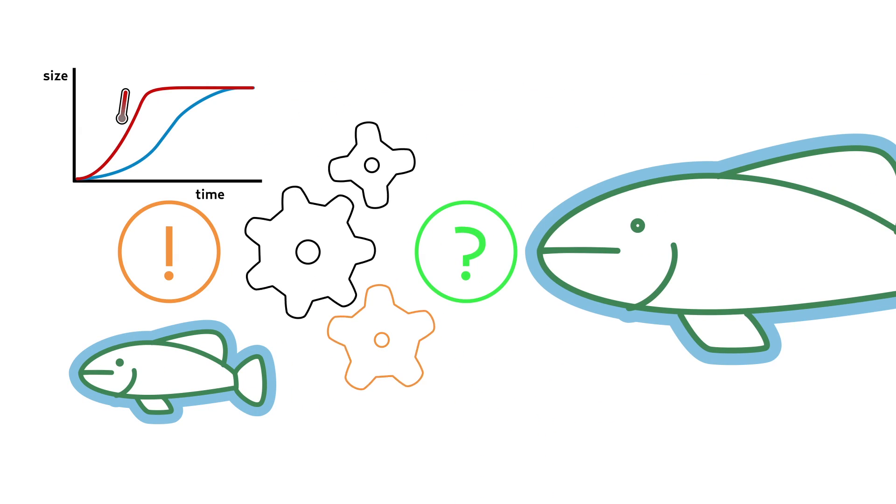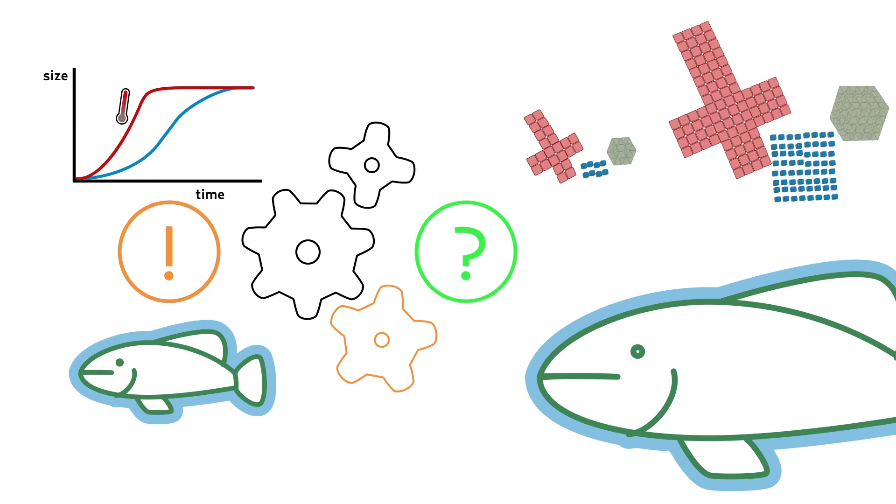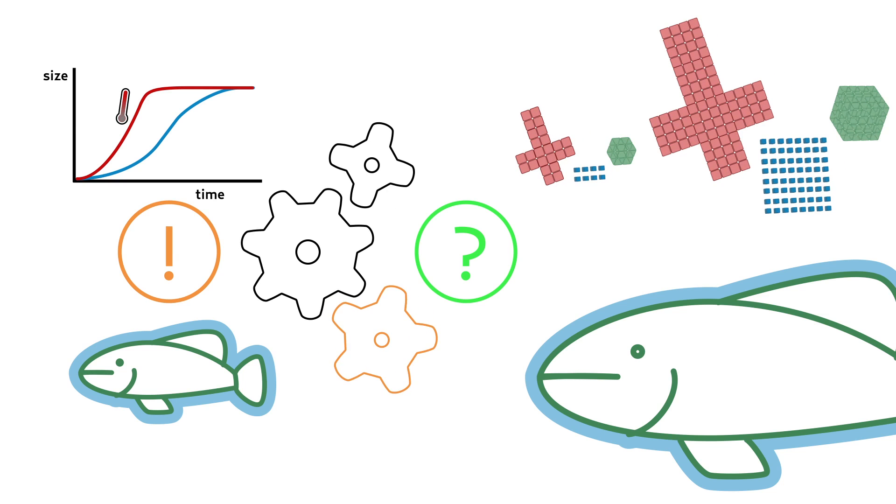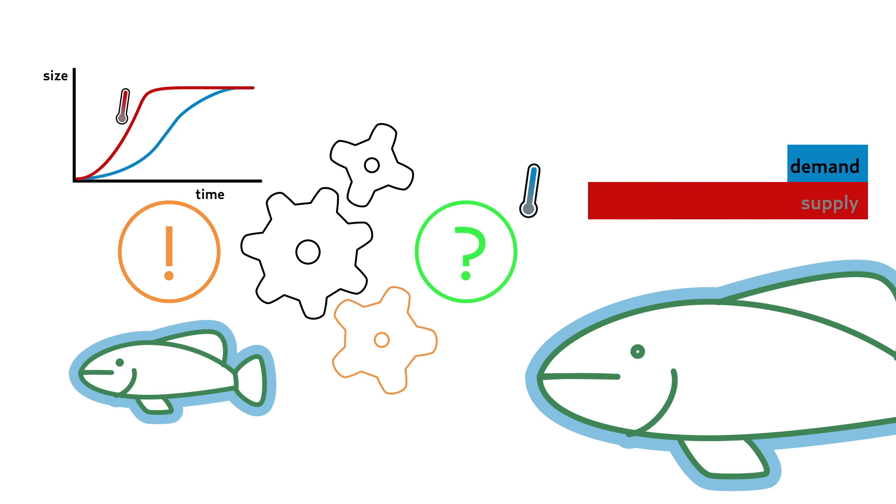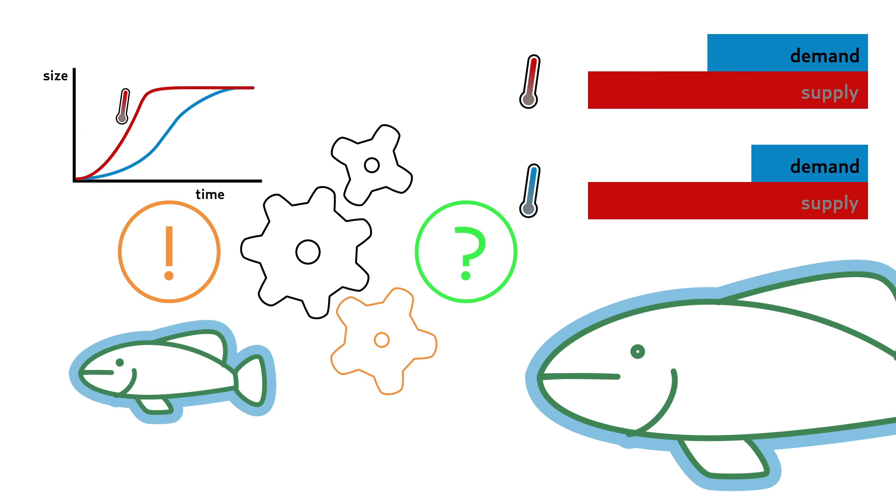Larger animals are much less hindered by viscosity, but face a different problem. They have a relatively large mass of tissue that requires oxygen. At higher temperatures, more energy, and hence more oxygen, is required to maintain these tissues.